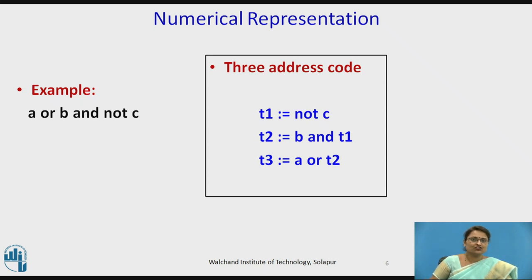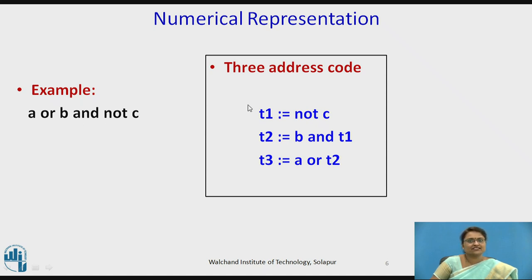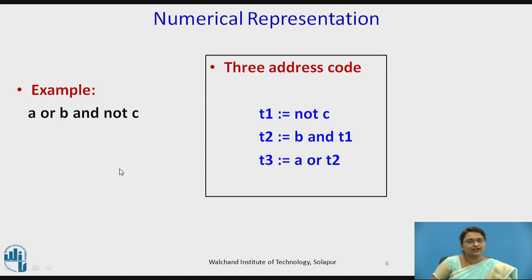Consider this numerical representation example: the expression is A OR B AND NOT C. According to operator precedence, NOT is evaluated first, then AND, then OR. So NOT C is calculated first, then AND is calculated, and finally OR. This is the 3-address code generated for this particular example.